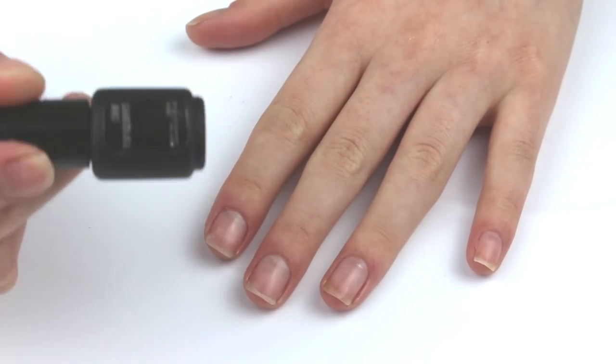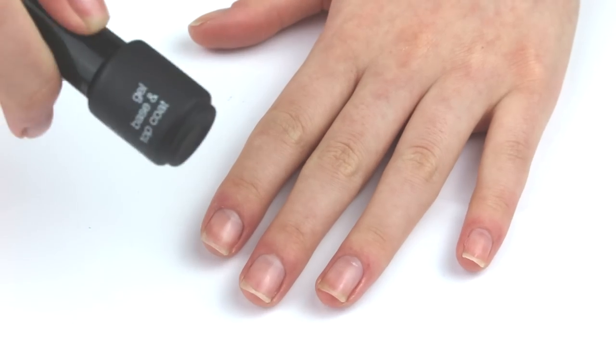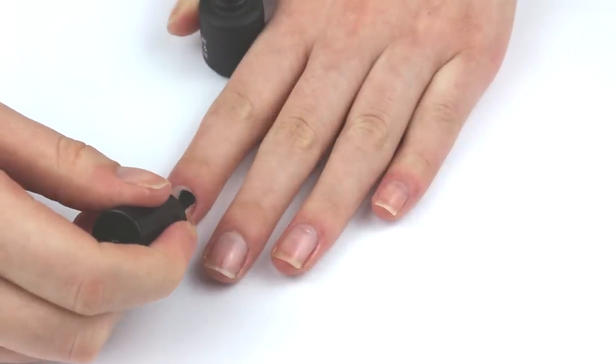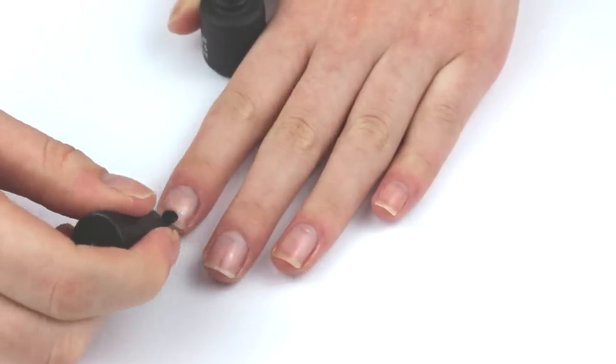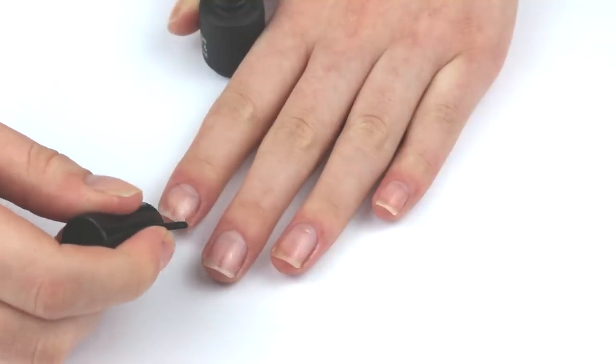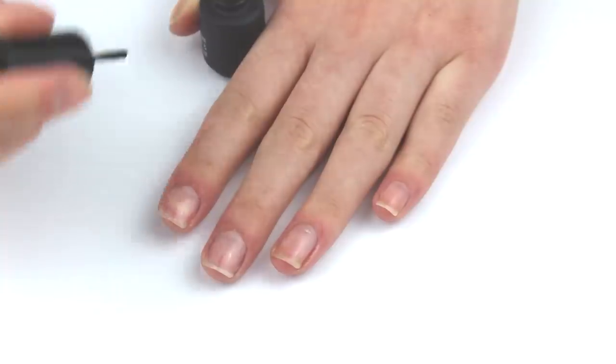Next I'm going to take my Sensation Nail Base Coat, which is the Clear Transparent Base and Top Coat. I'm going to apply a thin layer of that to every nail. I'm going to cap the free edge of the nail also, that will help my manicure last longer.